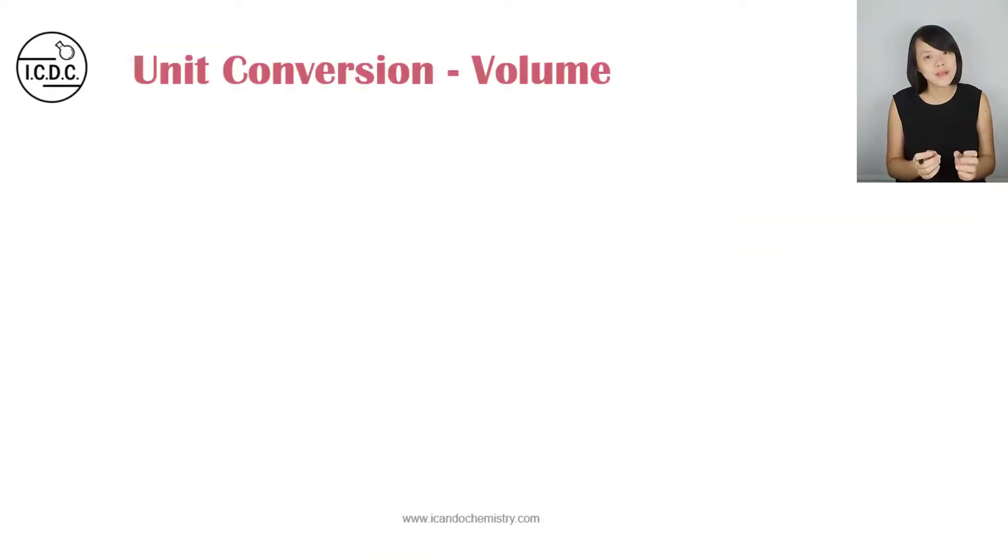Let's have a quick recap on unit conversion for volume. Now in chemistry calculations, you may deal with three types of units: meter cube, dm cube, and cm cube. From meter cube to dm cube, what we need to do is multiply by a thousand.